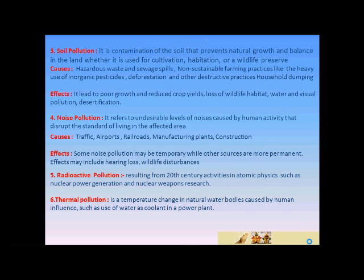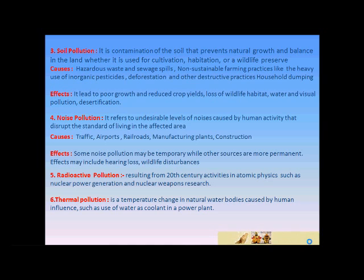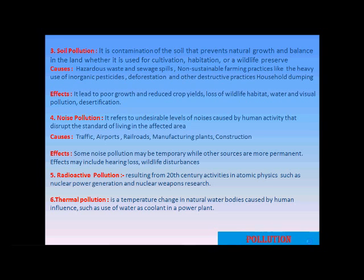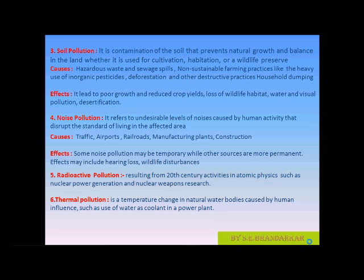The next type of pollution is soil pollution. It is contamination of the soil that prevents natural growth and balance in the land, whether it is used for cultivation, habitation, or wildlife. There are various causes like improper hazardous waste and sewage disposal, non-sustainable farming practices like the heavy use of inorganic pesticides, deforestation, other destructive practices, and household dumping.